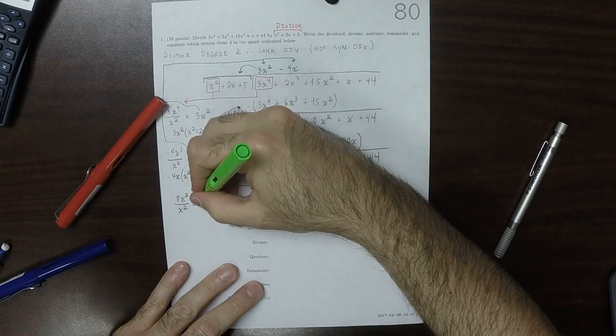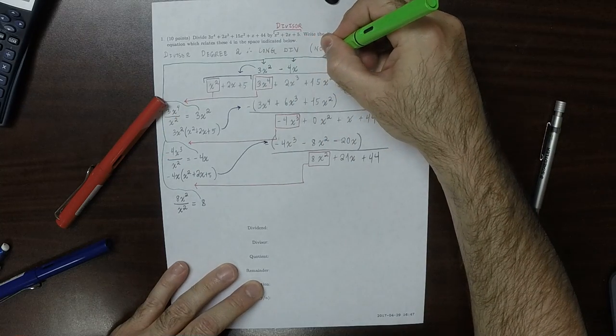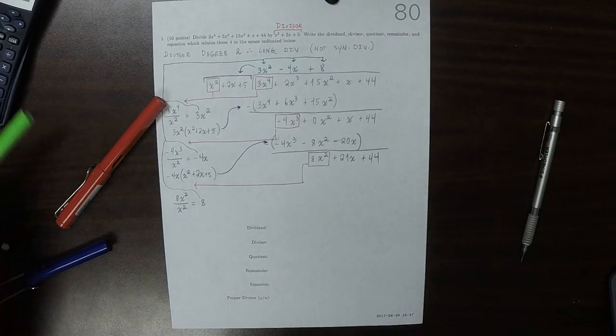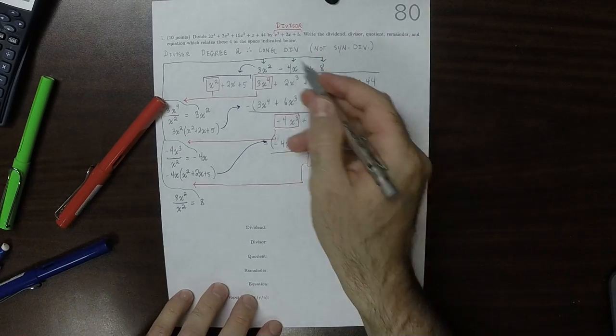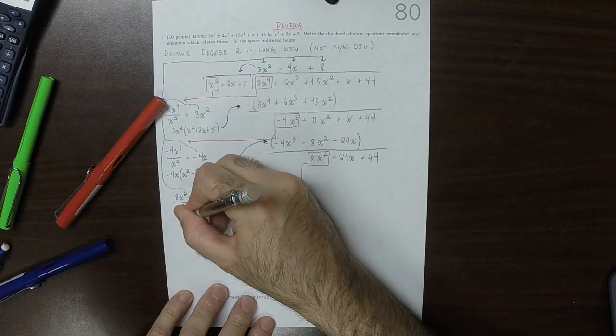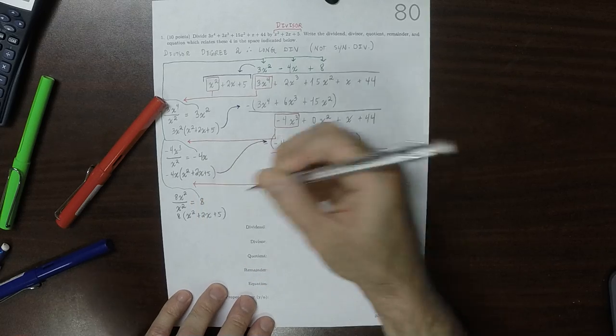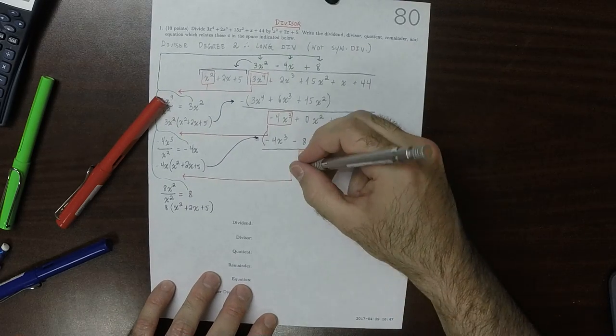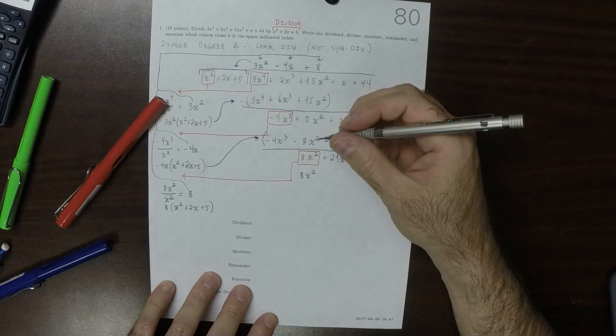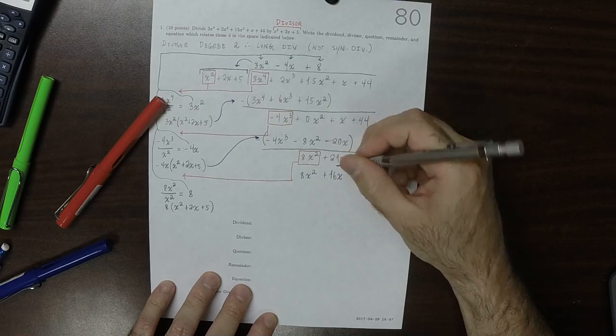That partial quotient gets taken to the top. It jumps off the house, hits the divisor on the way down. 8 times x squared plus 2x plus 5 gets written under here. 8x squared plus 16x plus 40.